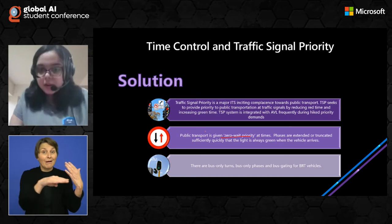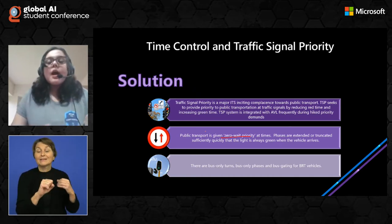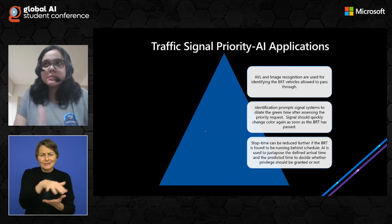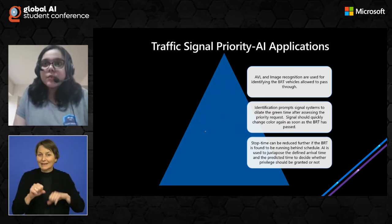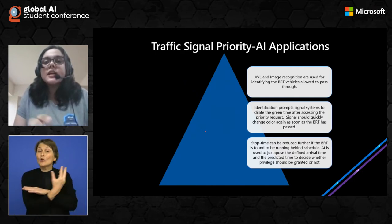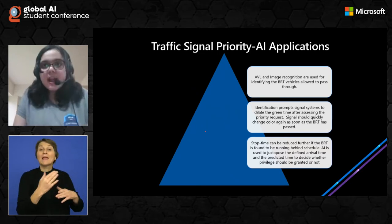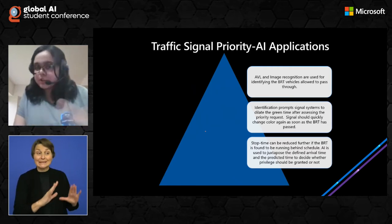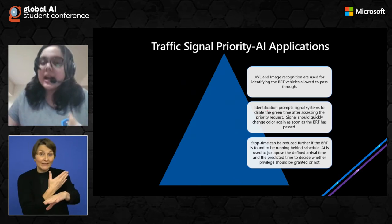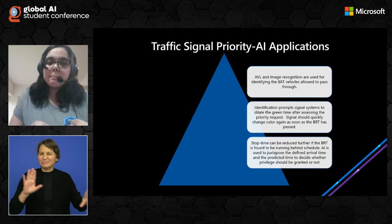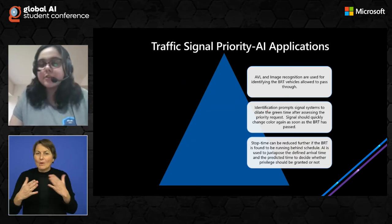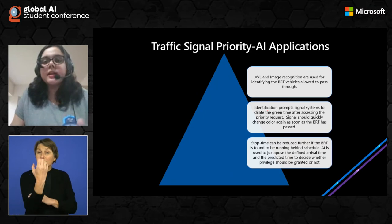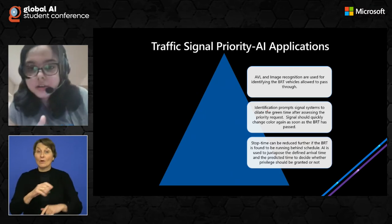There are bus-only turns, bus-only green phases, and bus gating for Bus Rapid Transit vehicles only. Image recognition is very important in this case because the green time is dilated only when a public transportation vehicle has been detected, and as soon as the vehicle leaves, the green time is quickly diminished and reverts back to red. AVL and image recognition are used for identifying the BRT vehicles that allow them to pass through. Identification prompts signal systems to dilate the green time after assessing the priority request — whether it's actually a BRT vehicle or a false alarm. Signals should quickly change color again as soon as the BRT vehicle has passed so that no private vehicle takes undue advantage of the TSP.